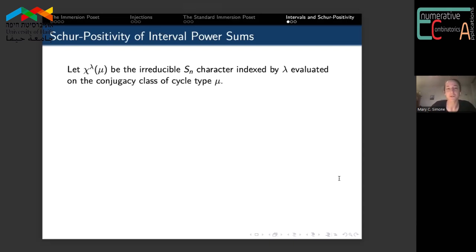Finally, I want to build up to a Schur positivity question. If we allow χλ(μ) to be the irreducible character for the symmetric group indexed by λ evaluated on the conjugacy class of cycle type μ, then the Murnaghan-Nakayama rule gives us the expansion of the power sum symmetric functions pμ in terms of the Schur functions where the coefficients that show up are precisely these symmetric characters evaluated on this conjugacy class μ.